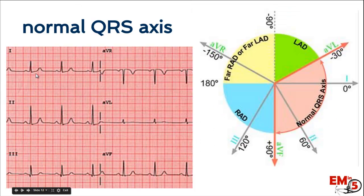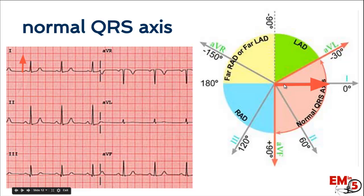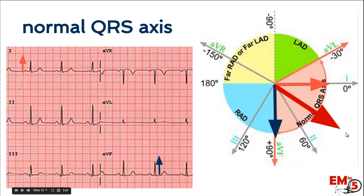Starting with lead 1 showing a positive wave, it's on the positive side of lead 1. In lead AVF, we also have a positive wave. When you average these two vectors, we get a direction that is left and downward. This is a normal QRS axis.